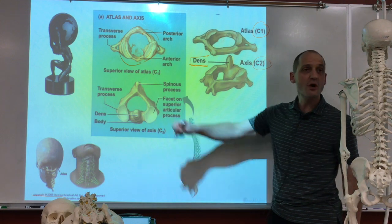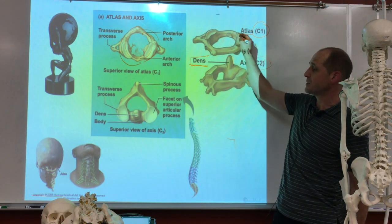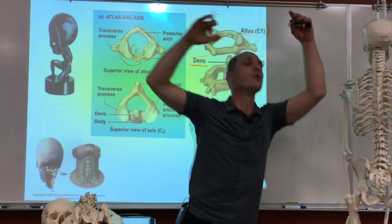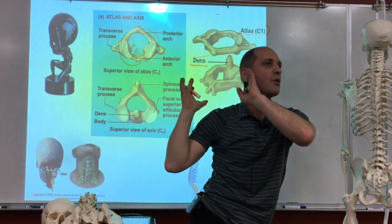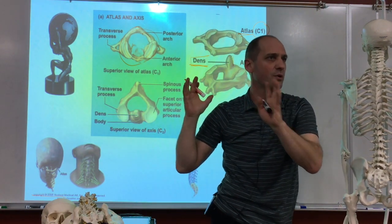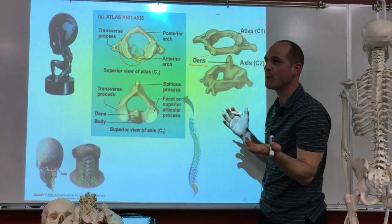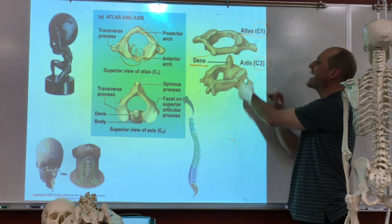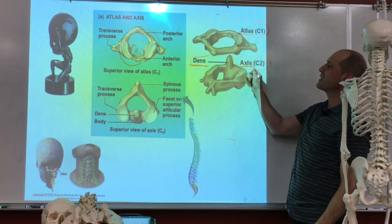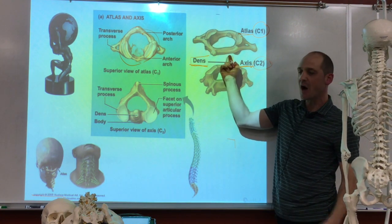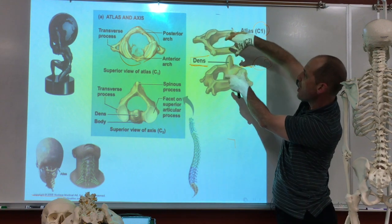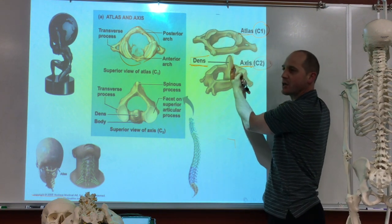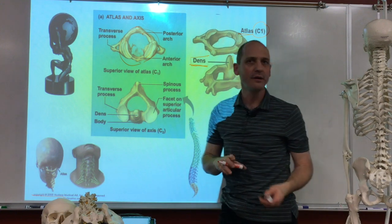The first vertebra is also known as the atlas because in Greek mythology, the atlas holds up the earth — so we call that bone the atlas. The second bone we call the axis because it's got this thing sticking up and the other one just turns around it — it's kind of like an axle in a car.